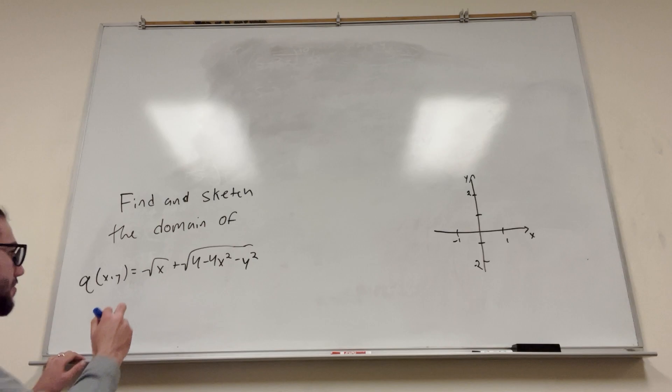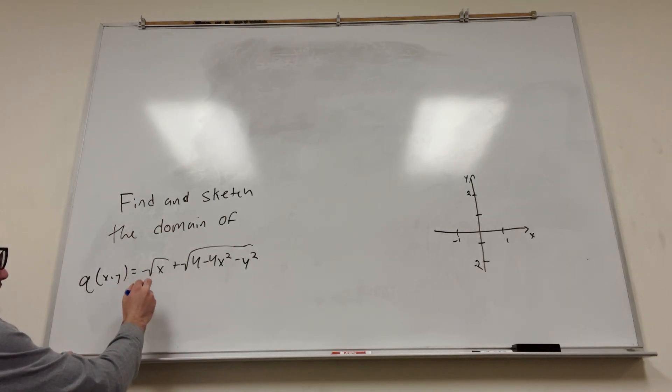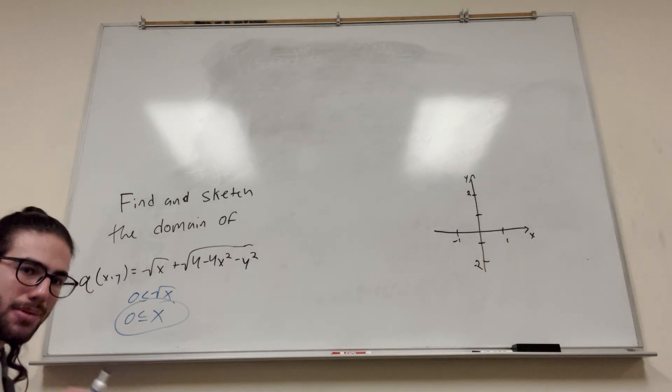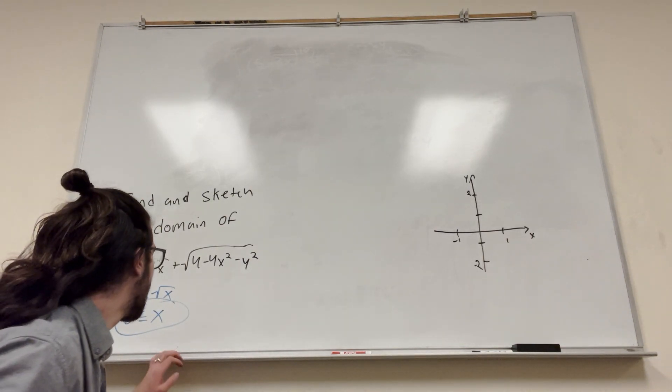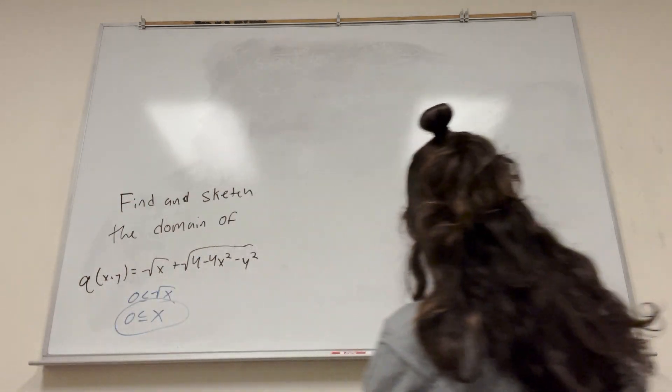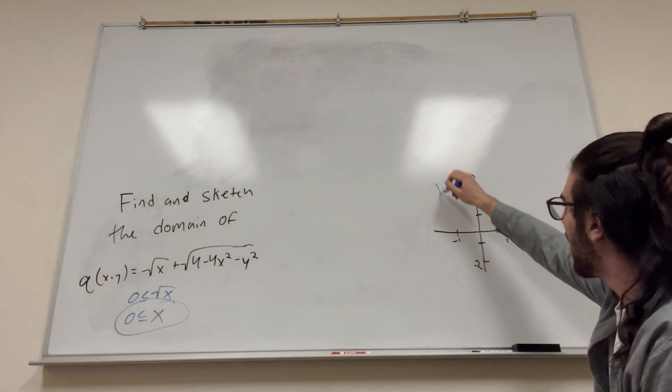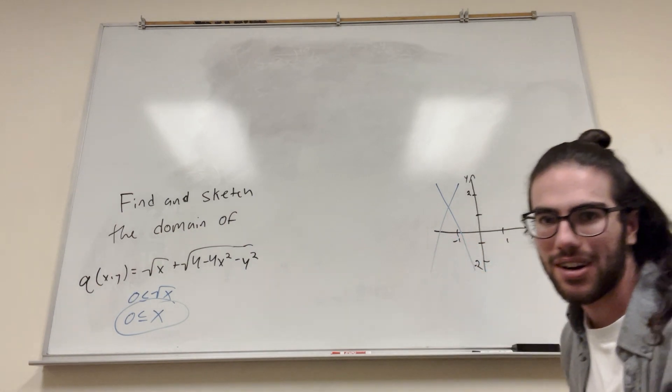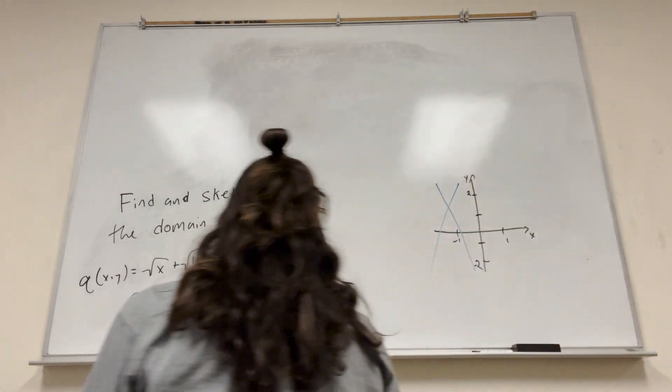So we have zero has to be less than or equal to the square root of x, so of course that means that zero has to be less than or equal to x. That's a function right there, very valuable information. That means that x has to be on this side. It cannot be negative. All of this is not fair game anymore. You can't use that. That's not anything that can exist on this function.